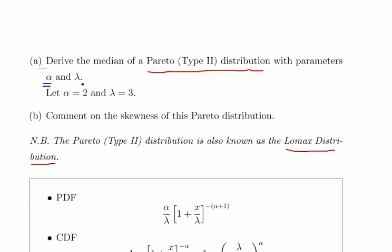We're looking for alpha and lambda, the shape parameter and the scale parameter respectively. In this question we're going to let them equal 2 and 3 respectively. The question is: derive the median of a Pareto Type II distribution with parameters alpha and lambda, letting those equal 2 and 3, and comment on the skewness of this distribution.